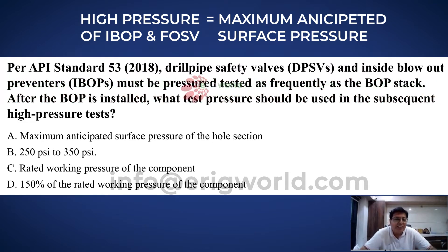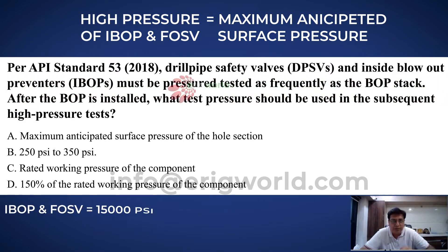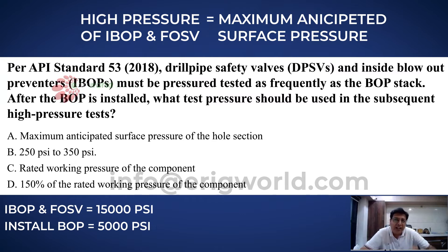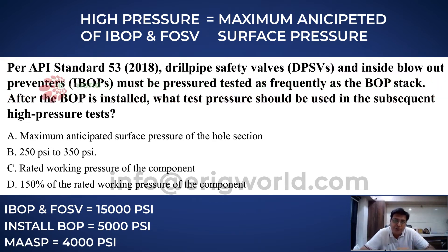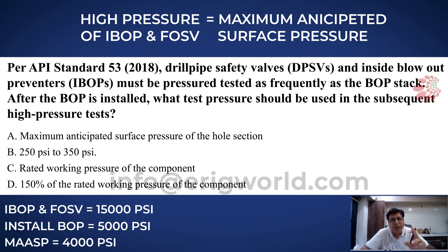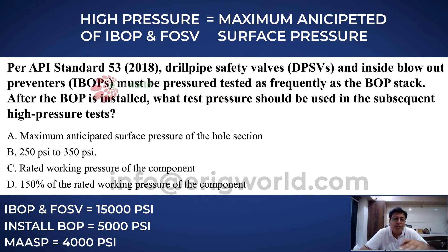In this case, let's say my IBOP or FOSV is rated at 15,000 psi, the BOP installed is rated at 5,000 psi, and the maximum anticipated surface pressure of that section is 4,000 psi. So at what pressure should I test my drill pipe safety valve? The minimum test pressure for any equipment installed on the wellhead should be at least equal to the maximum anticipated surface pressure of that section, which is 4,000 psi. So you must test it at 4,000 psi.